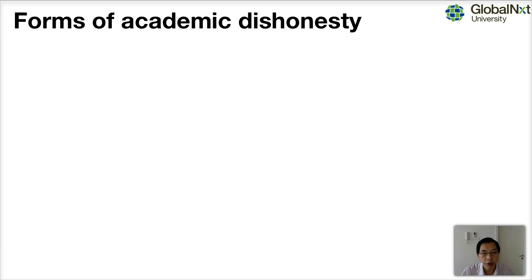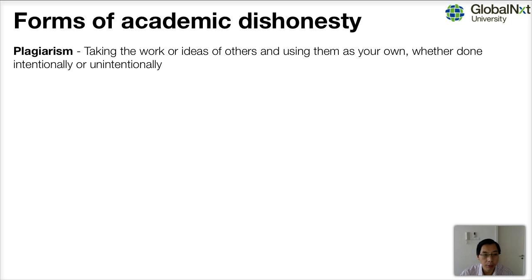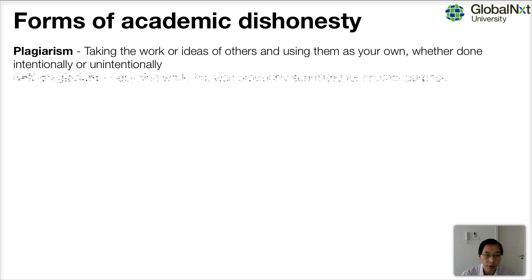There are many different forms of academic dishonesty and I would like to share with you some of the different forms here. Plagiarism is the one that most people know about. This is taking the work or ideas of someone else and trying to pass them off as your own, and it doesn't matter whether that's done intentionally or unintentionally — it's still plagiarism.